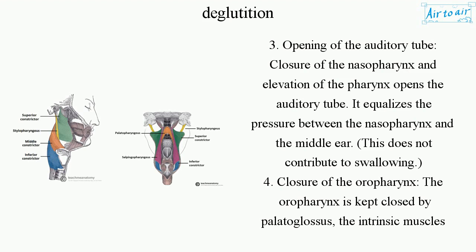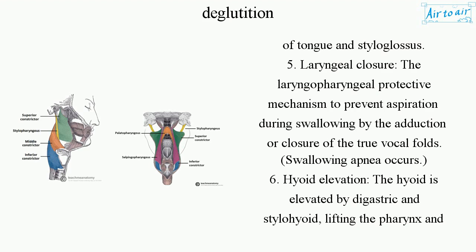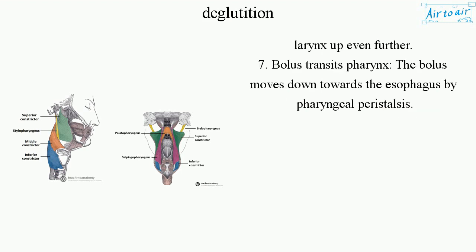3. Opening of the auditory tube — closure of the nasopharynx and elevation of the pharynx opens the auditory tube, equalizing pressure between the nasopharynx and the middle ear; this does not contribute to swallowing. 4. Closure of the oropharynx — kept closed by palatoglossus, intrinsic muscles of tongue, and styloglossus. 5. Laryngeal closure — adduction of the true vocal folds; swallowing apnea occurs. 6. Hyoid elevation — elevated by digastric and stylohyoid, lifting the pharynx and larynx further. 7. Bolus transits pharynx — moves down towards the esophagus by pharyngeal peristalsis.